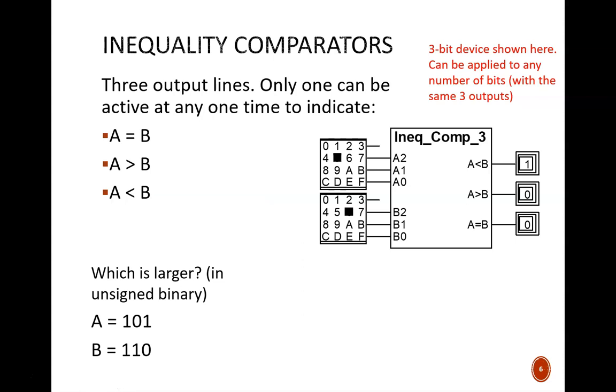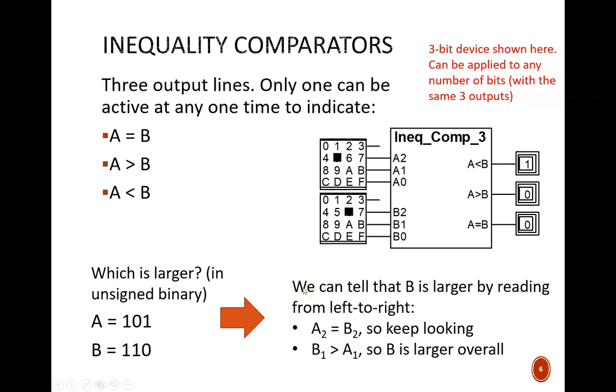Here's a simple question. Which is larger, 101 or 110? And more importantly, how can we tell? B is the larger number. The way we tell is by reading left to right, or most to least significant bit. The most significant bits are equal to each other.